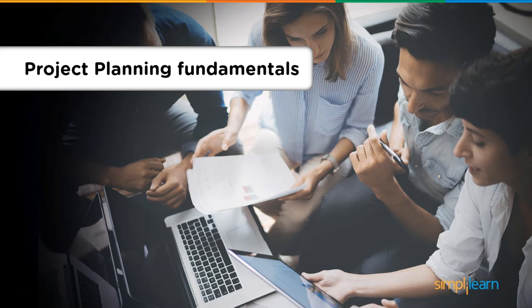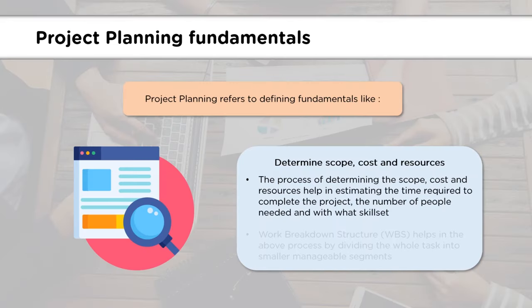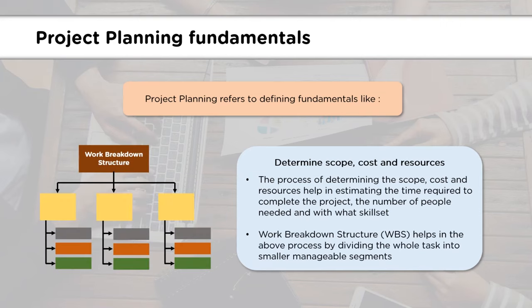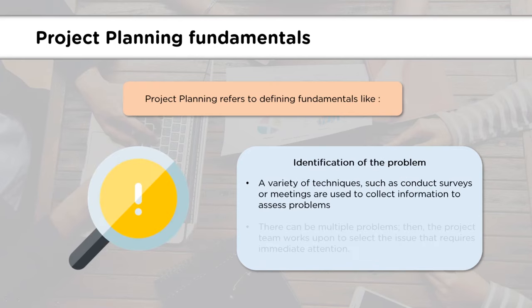Now let's look at the project planning fundamentals. The first fundamental is the determination of scope, cost, and resources. This helps in having a rough estimate of the time required to finish the project, determining the number of people required and what their skill set should be. We can divide the project into smaller manageable sections, and this is made possible with the help of work breakdown structure.